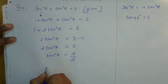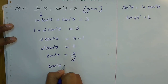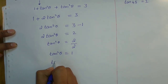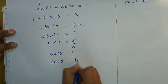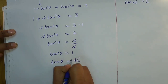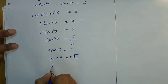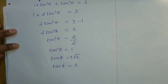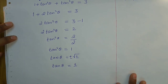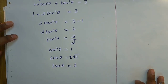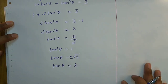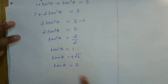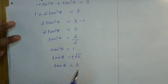So 2 cancels, giving tan²θ = 1. Taking the square root on both sides, tan θ = ±1. Since θ is an acute angle, we reject the negative value and take tan θ = +1.